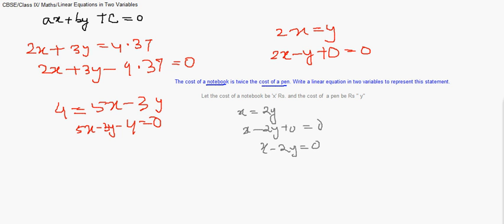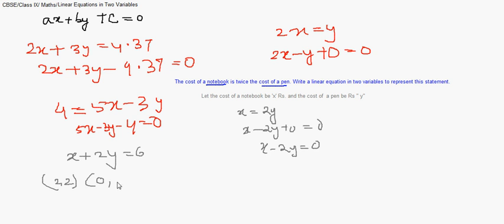Suppose we take x plus 2y equals 6. How do we find the solution? We use trial and error — we substitute values for x and y and check. If x equals 2 and y equals 2, that gives 2 plus 4 equals 6, so (2, 2) is one solution. If x equals 0 and y equals 3, that also gives 6, so (0, 3) is another. If y equals 0 and x equals 6, that also works. So this equation has many solutions.